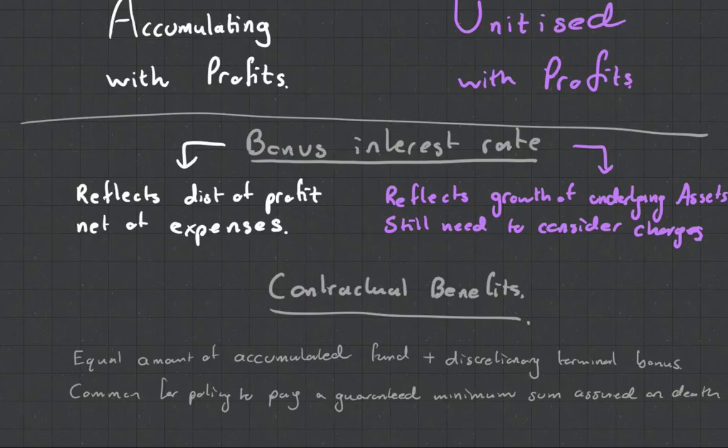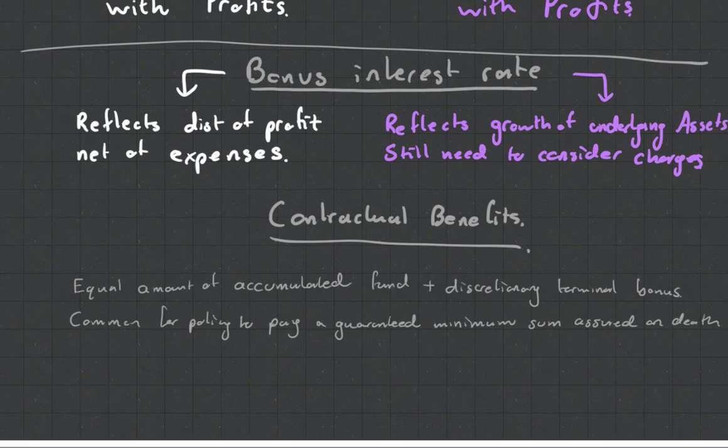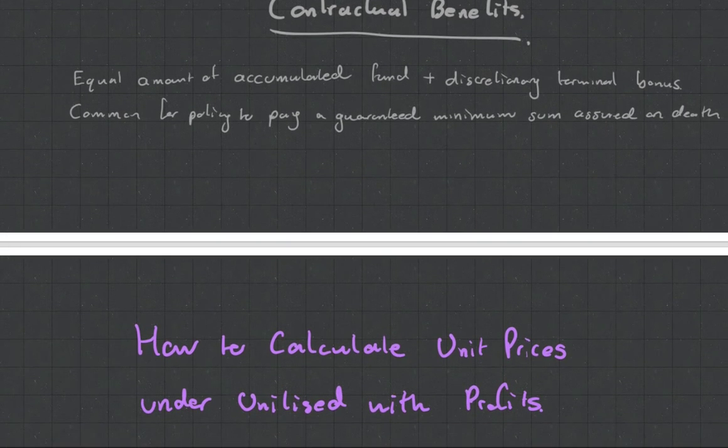Your contractual benefits - this is an equal amount of accumulated fund plus discretionary terminal bonus, common for policies to pay a guaranteed minimum sum assured on death. This is just very much theory, not a lot of calculations - you can read through this.